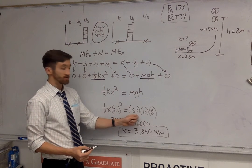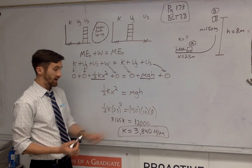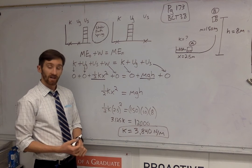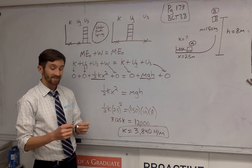So one-half k times 2.5 squared gives me 3.125k. Over here, 150 times 10 times 8 gives me 12,000, and when I solve for k, that gives me 3,840 newtons per meter, as the spring constant.